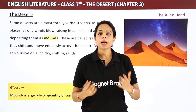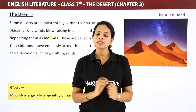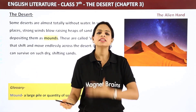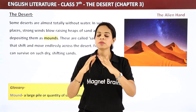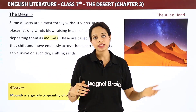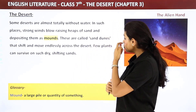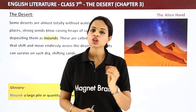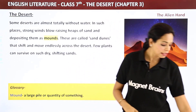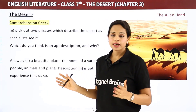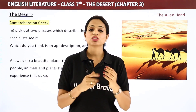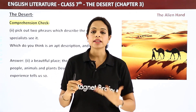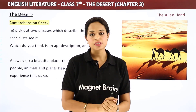These sand dunes shift and move endlessly across the desert. Kyunki wind naturally keeps changing, it's an ongoing natural process. So ek dune nahi banta — thousands and lakhs of dunes banay rahate hain wahan pe. Now few plants can survive on such dry shifting sands. Woh plants hote hain jaise cactus, jinhe bahut zyada paani nahi chahiye hota — wahi survive kar sakte hain wahan pe.